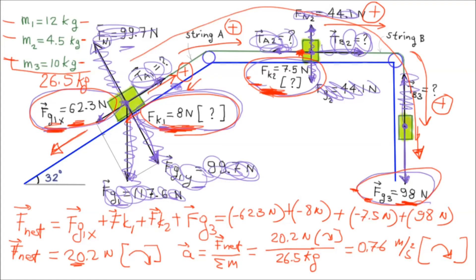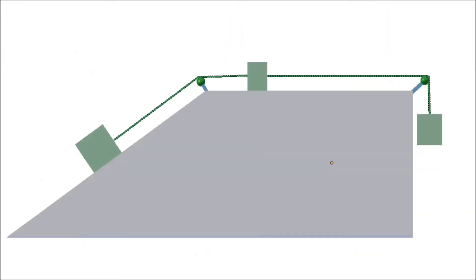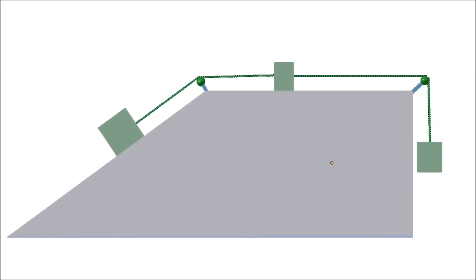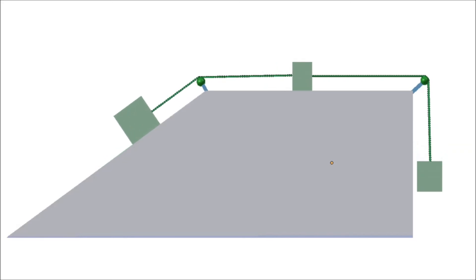Let's run the animation. As you can see in the animation, the pulley system consisting of block 1, block 2, and block 3 moves in the clockwise direction.